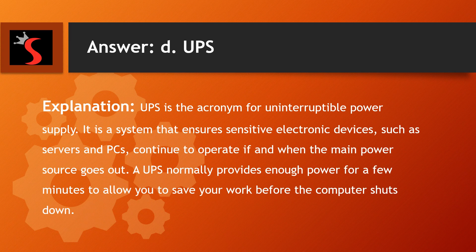The right answer is option D. UPS. Explanation: UPS is the acronym for Uninterruptible Power Supply. It is a system that ensures sensitive electronic devices such as servers and PCs continue to operate if and when the main power source goes out. A UPS normally provides enough power for a few minutes to allow you to save your work before the computer shuts down.